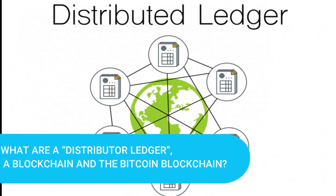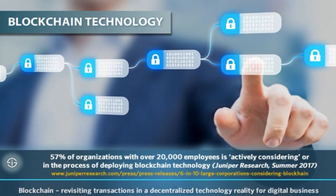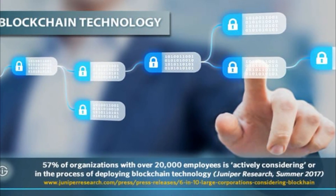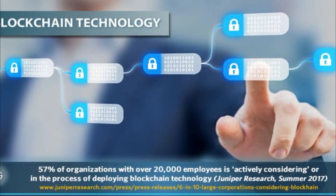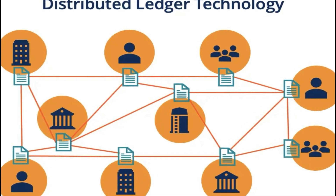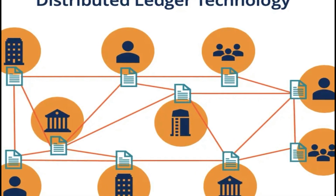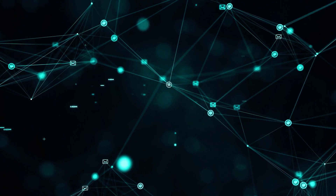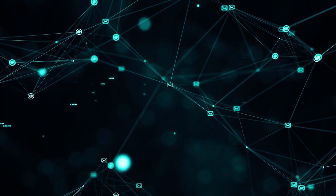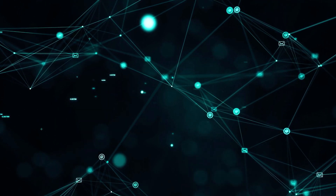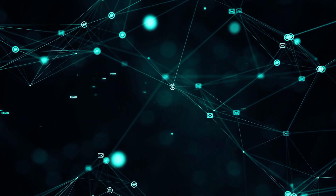What are a distributed ledger, a blockchain, and the Bitcoin blockchain? A distributed ledger or blockchain — the latter name is generally associated with the use of Bitcoin, and literally translates to chain of blocks — is an open and distributed ledger that can safely store transactions between two parties, verifiable and permanent. The participants in the system are defined as nodes and are connected to each other in a distributed manner. In essence, it is an ever-growing list of records called blocks, which are linked together and secured through the use of cryptography.